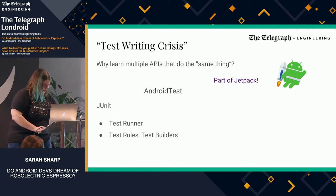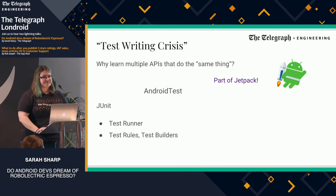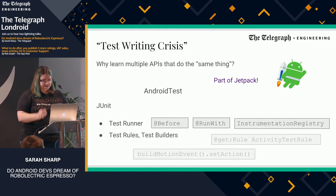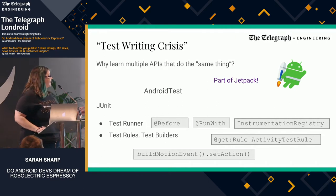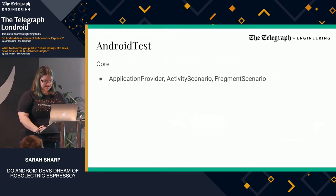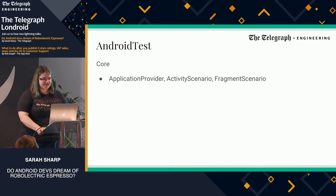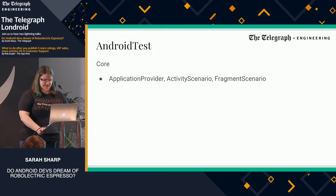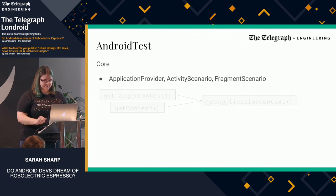The Android test library contains the same test runners, test rules, and test builders that you might be used to from running things on Android devices to get your context and stuff. Test builders are something new. It also contains core methods like ApplicationProvider to get your context. Activity scenarios and fragment scenarios are fairly new as well — they came out of the October release. They deal with lifecycle handling aspects in a more efficient way.